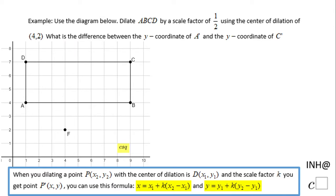Welcome or welcome back to I Need Help at C Squared. In this problem, we're going to look to find the difference between the y-coordinate of A prime and C prime after we dilate by a scale factor of one-half. You see the center of dilation is here. What I would like you to take a look at is these two points.